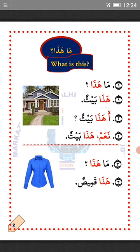Ma hatha — what is this? Number 1: Ma hatha, what is this? Hatha bayt — this is a house. Number 2: Ahatha bayt — is this a house? We use hamza for asking questions. Naam — yes. Hatha bayt — this is a house.